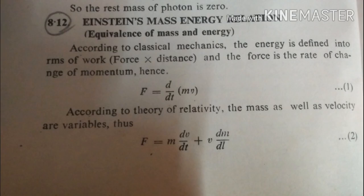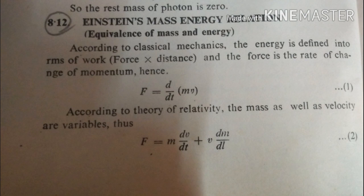Next one is Einstein's mass-energy relation. According to classical mechanics, energy is defined in terms of work, that is, force into distance, and the force is the rate of change of momentum. Hence F equals to d by dt of mV. According to the theory of relativity, mass as well as velocity are variables. Thus F equals to m dV by dt plus V dm by dt.